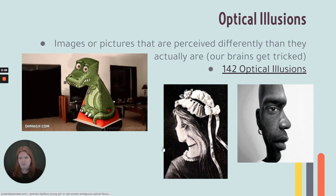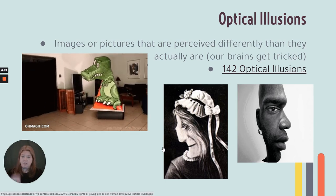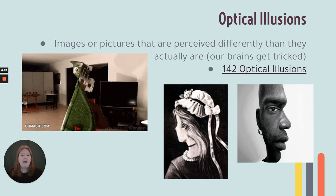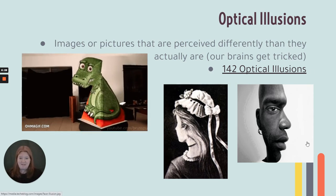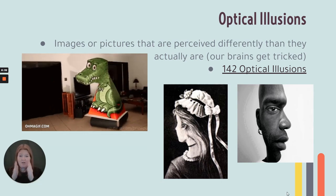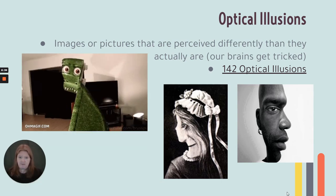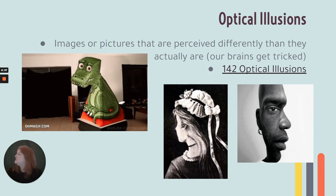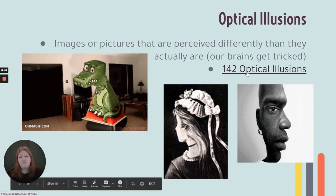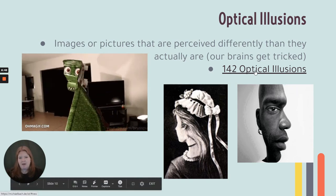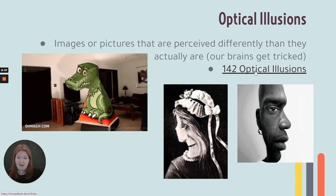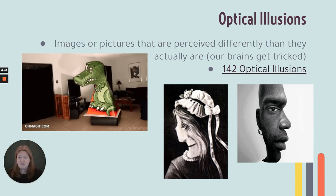This is a version of wife and mother-in-law, where you can either see a younger woman looking back or an older woman in profile view. And this one — you can either see someone looking straight at you with half of their face cut at a strange angle, or a profile view of someone. If you just Google '142 optical illusions,' you can go to a site that has literally 142 optical illusions — interesting to go through and it provides explanations.